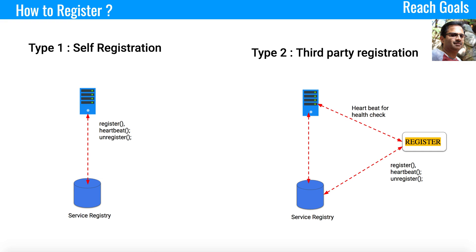The registrar also keeps pinging the different servers to make sure they are healthy and running. If a server or service is not running, it immediately unregisters it using a heartbeat mechanism. One key difference between self-registration and third-party registration is that in self-registration you must write code within the service to connect and register with the service registry, whereas with third-party registration you don't need to write that code — you rely on the third-party component to handle registration.